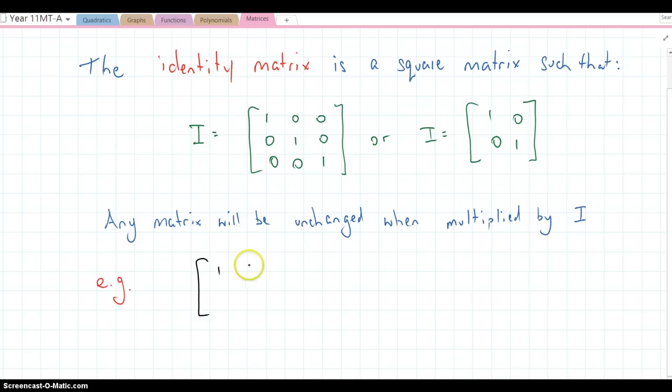So if we just take a very simple 1, 2, 3, 4 matrix, obviously it needs to be square and multiply that by 1, 0, 0, 1.